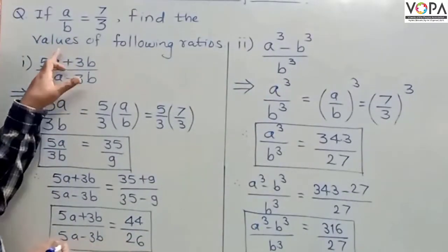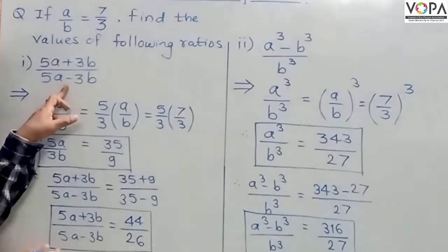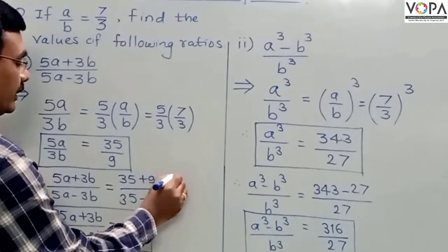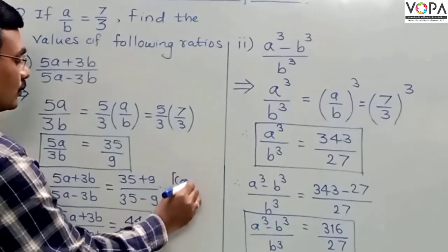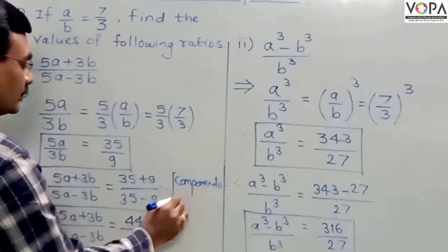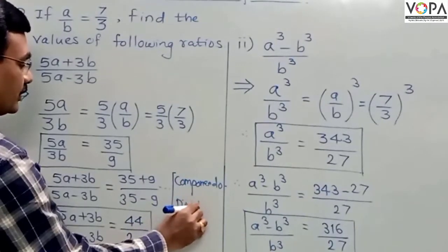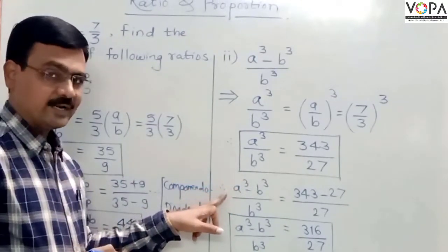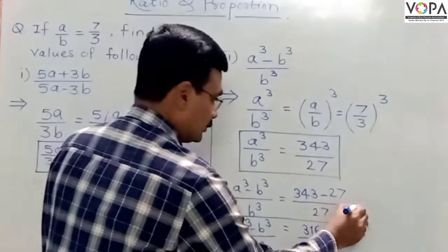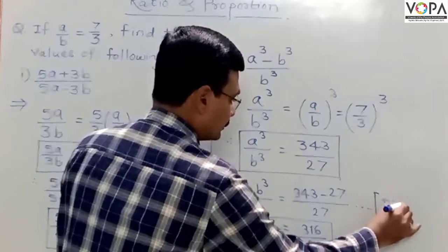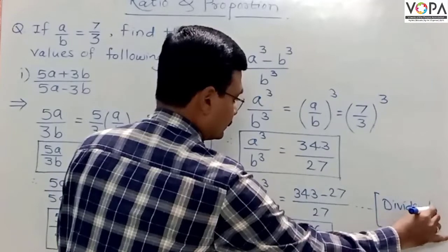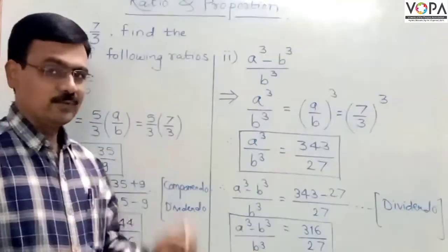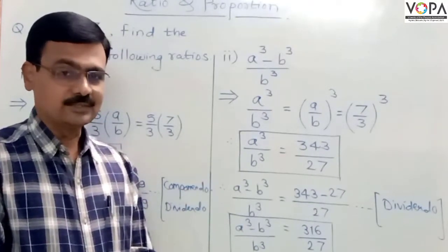In the first example, there was addition in the numerator and subtraction in the denominator, so that operation was componendo-dividendo. In the second example, there was subtraction in the numerator, so we used dividendo. By this way, by using the operations on equal ratios, we can solve the examples.